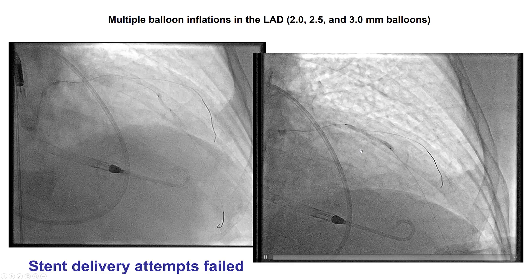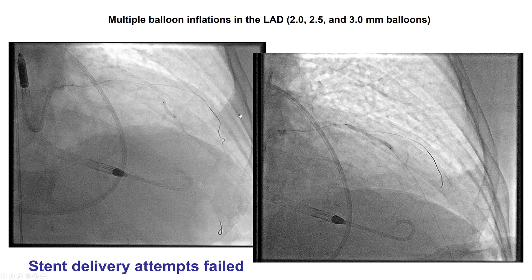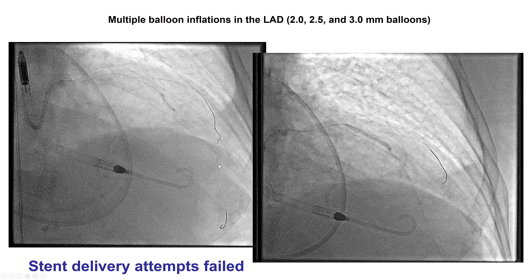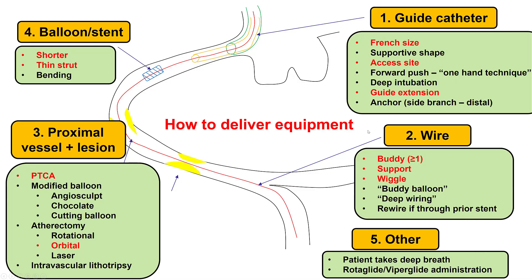The next challenge came when we tried to deliver a stent. Despite multiple high pressure balloon inflations, we were unable to deliver various stents into the middle LAD. That brings us to the algorithm for delivering stents and other equipment. The basic components are to either modify the support — using a different guide catheter, different wire — or use more lesion modification by either balloon angioplasty, atherectomy, or intravascular lithotripsy.